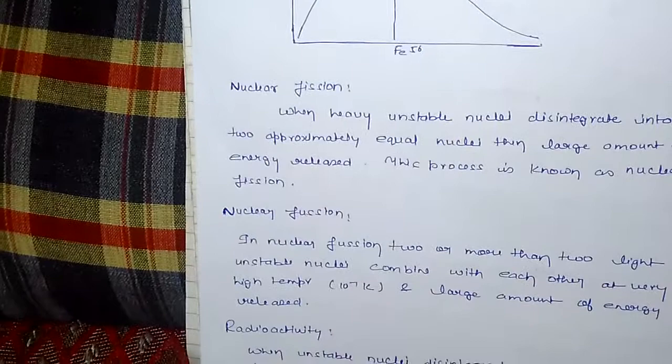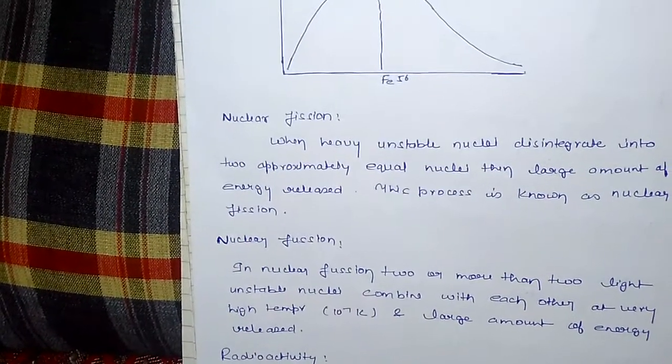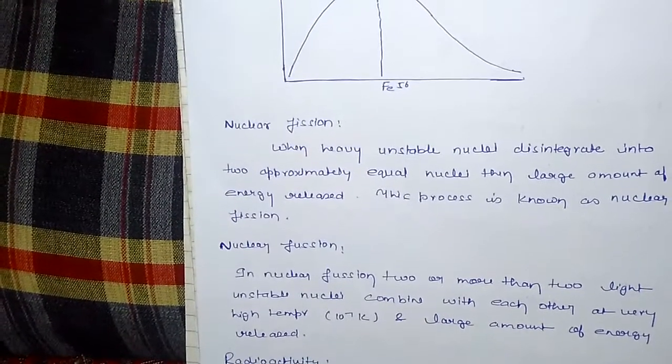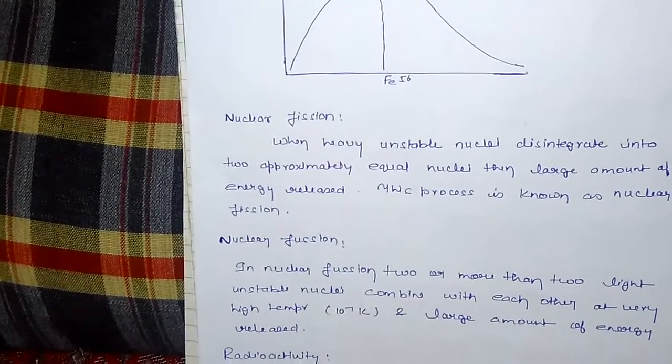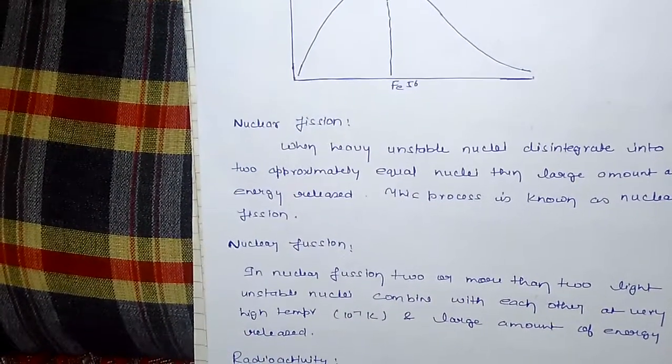Nuclear fusion: In nuclear fusion two or more than two light unstable nuclei combine with each other at very high temperature, that is 10 to the power 7 Kelvin, and large amount of energy is released. This process is known as nuclear fusion.